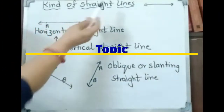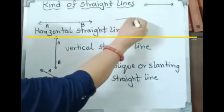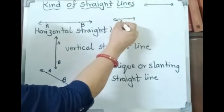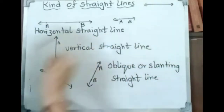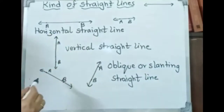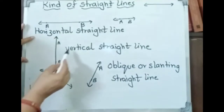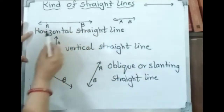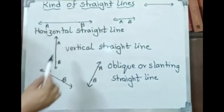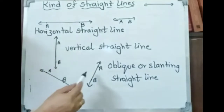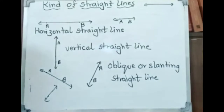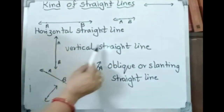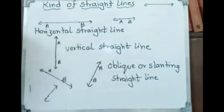There are kinds of straight lines. A horizontal straight line — as you daily write in your notebook — that is a horizontal straight line. A vertical straight line: when you put your scale in a vertical position, that is a vertical straight line. An oblique or slanting line goes diagonally. Whenever we have both-side arrowheads, these are lines. This is horizontal, this is vertical, and this is oblique or slanting straight line.